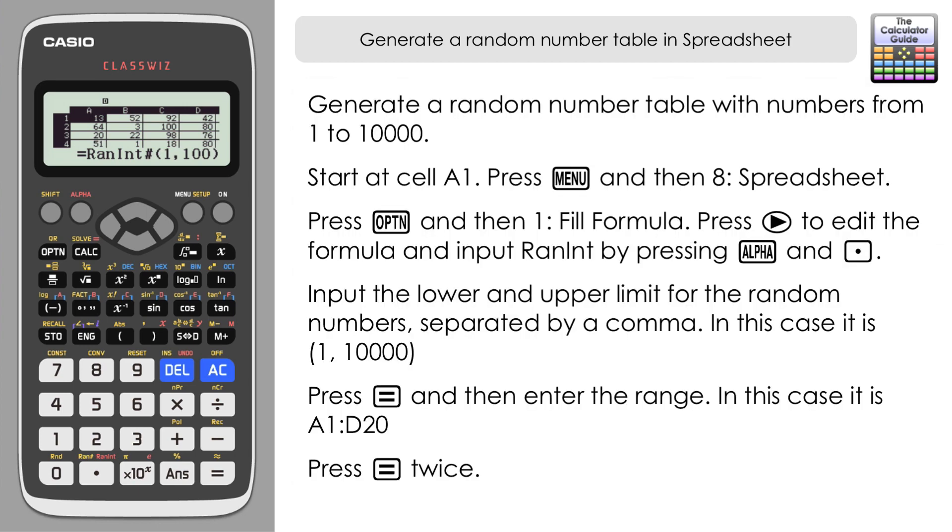Let's just generate some random numbers from 1 to 10,000 this time. I'll click on my first starting cell, that's A1, and Option and Fill Formula again.